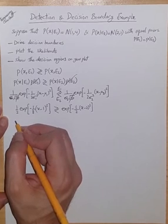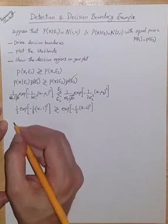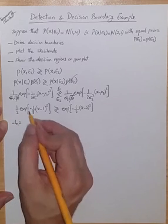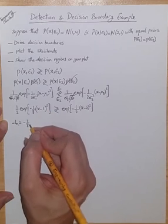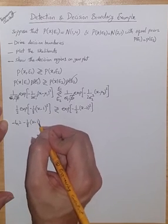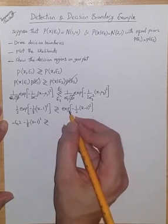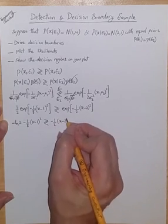Now, we can take ln from both sides. So, we get ln of 1 over 2, which is minus ln 2. ln of this is just the exponent. So, it's going to be minus 1 over 8 x minus 1 squared. Compared with ln of this, ln of this is just the exponent minus 1 over 2 x minus 2 squared.